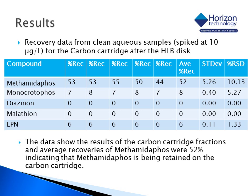Recovery data for the carbon cartridges showed that most of the methamidophos was absorbed on the carbon cartridge and did in fact break through the HLB disk. Average recoveries were about 52 percent on the carbon scavenger column, which proved that the carbon cartridge was indeed necessary in the system configuration to optimize the extraction of methamidophos.